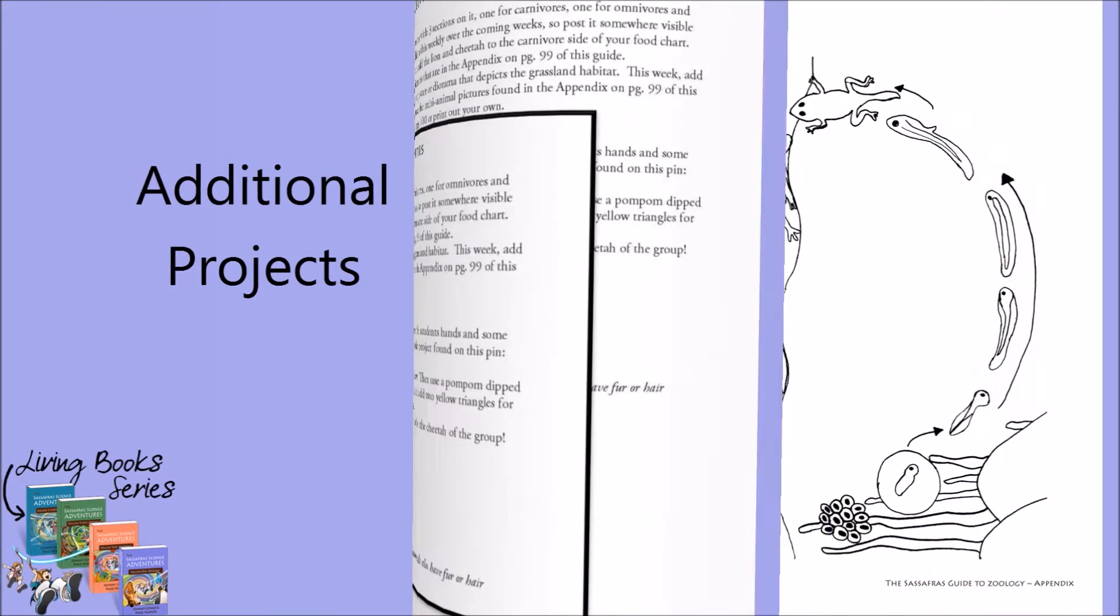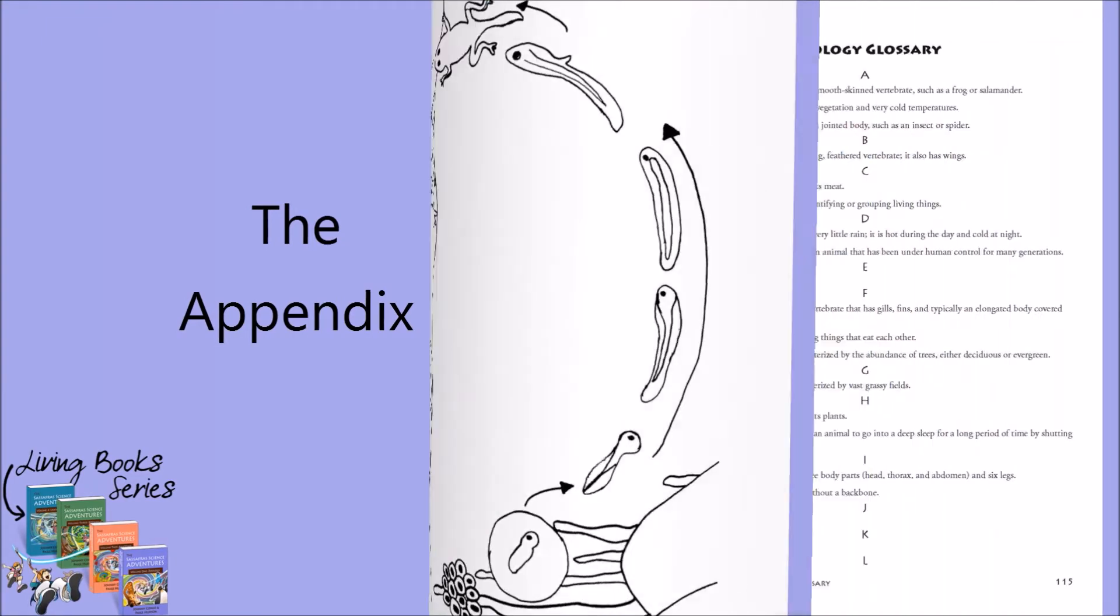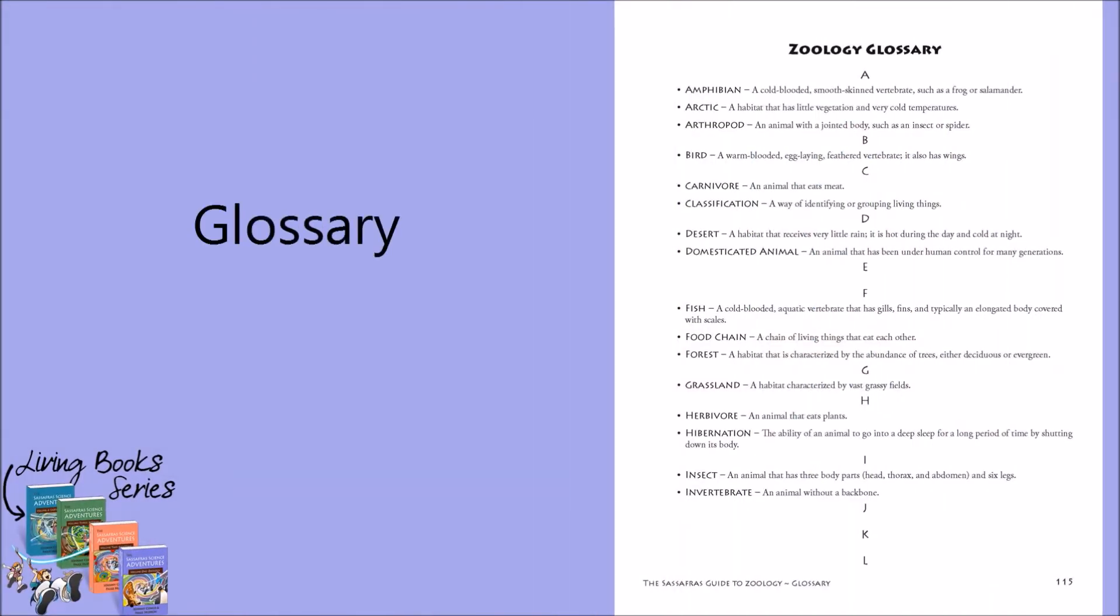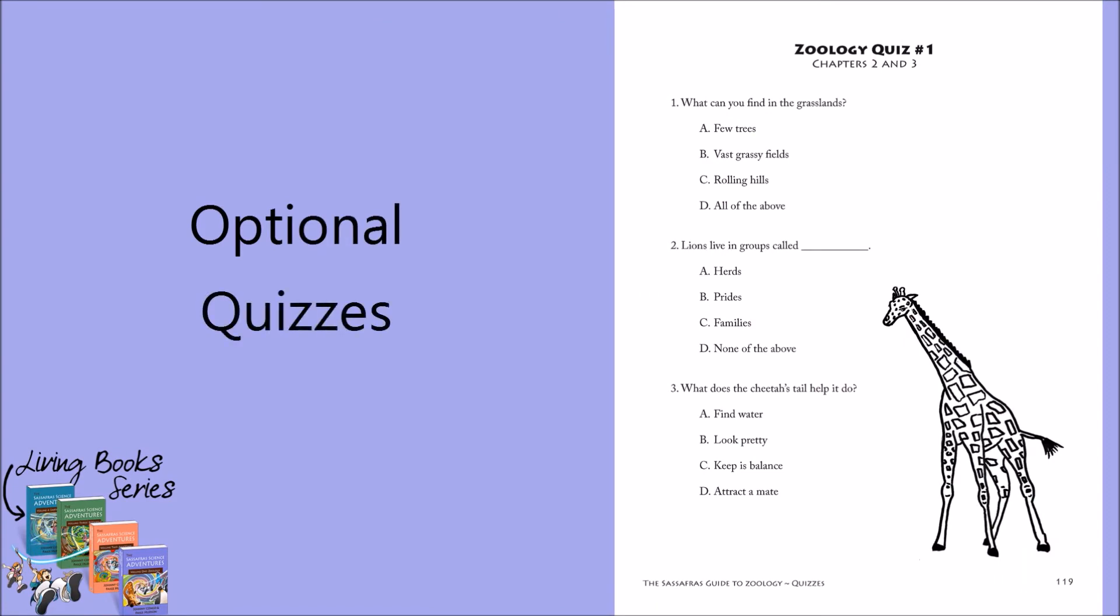After the 18 chapter sheets, you will find the appendix, which contains useful templates and pictures you can use as you work through the activity guide. These templates are followed by a glossary of the vocabulary terms. And finally, in the rear of the activity guide, you will find the optional quizzes.